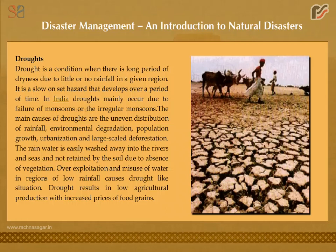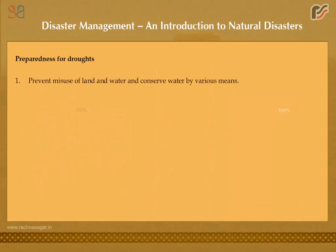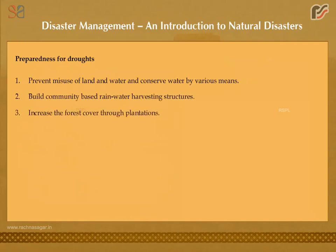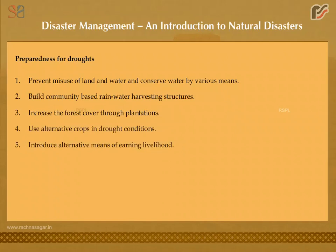Drought results in low agricultural production with increased prices of food grains. Preparedness for droughts: prevent misuse of land and water and conserve water; build community-based rainwater harvesting structures; increase forest cover through plantations; use alternative crops in drought conditions; introduce alternative means of earning livelihood; encourage crop and seed insurance schemes; and promote recycling of water.